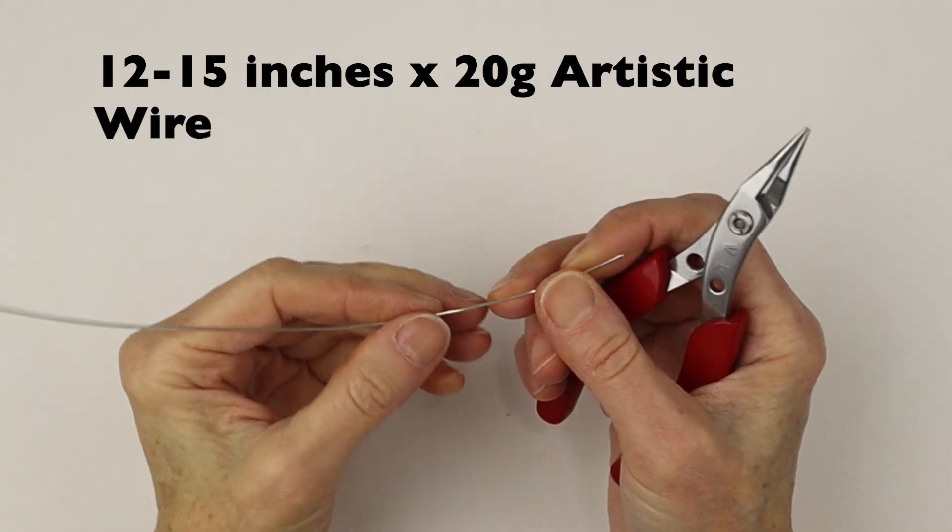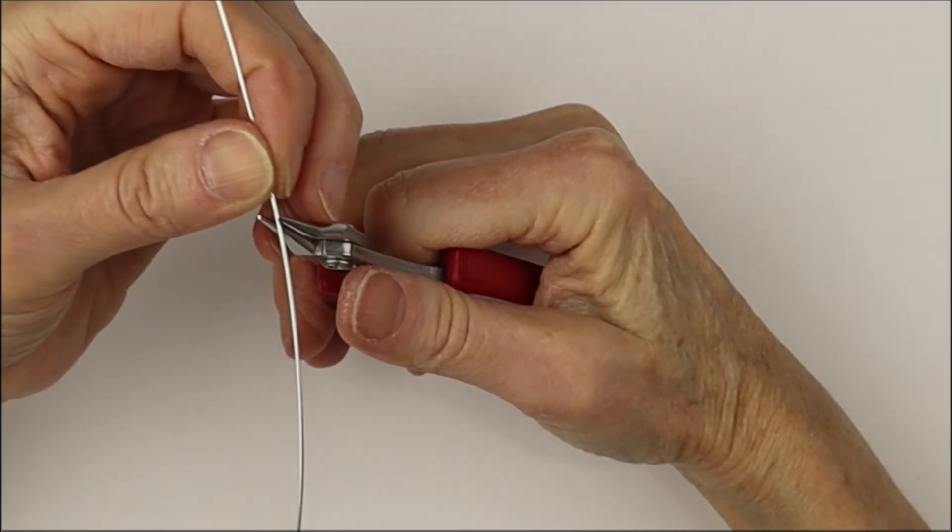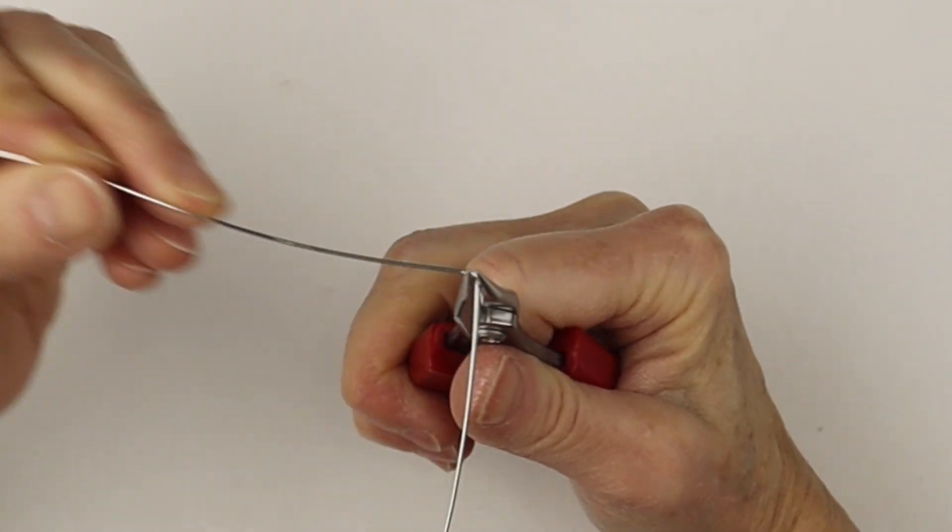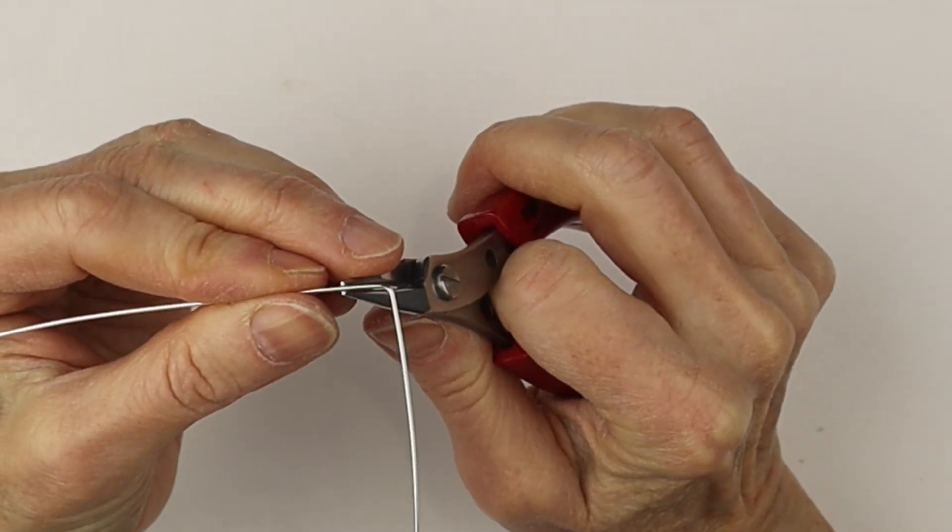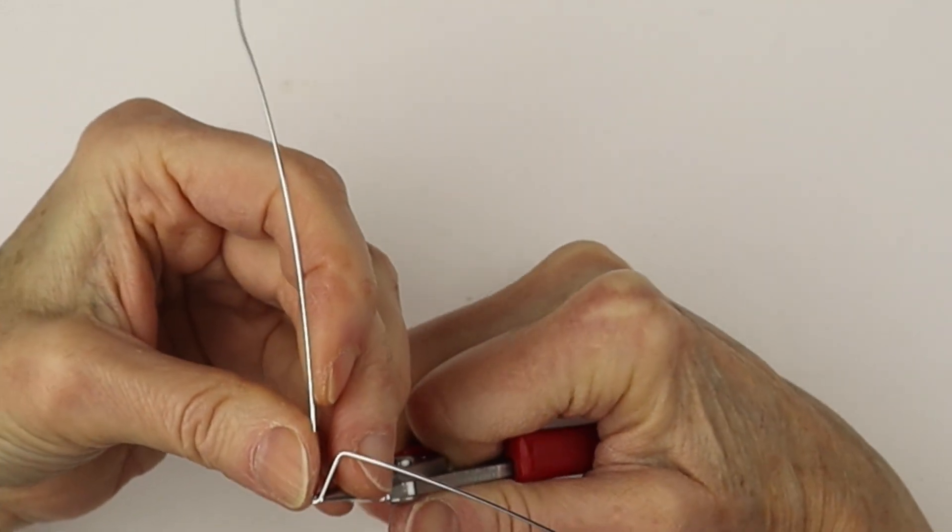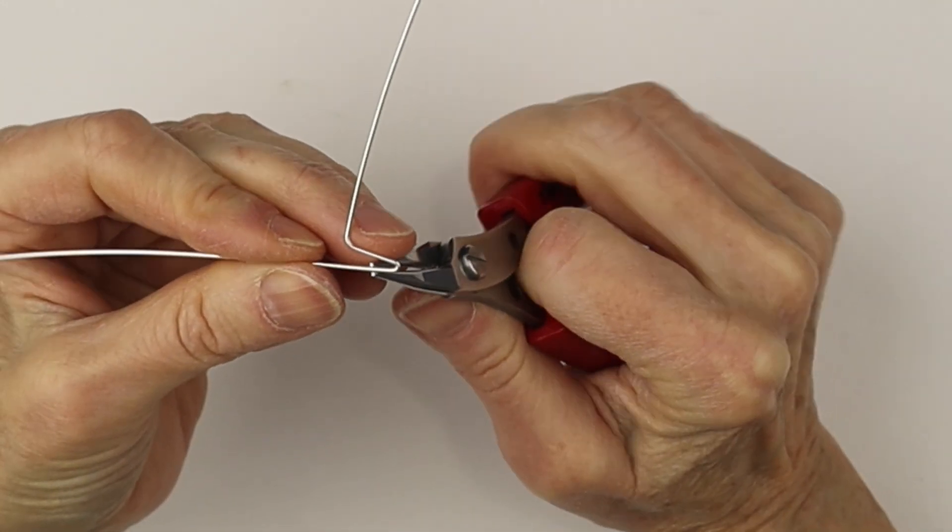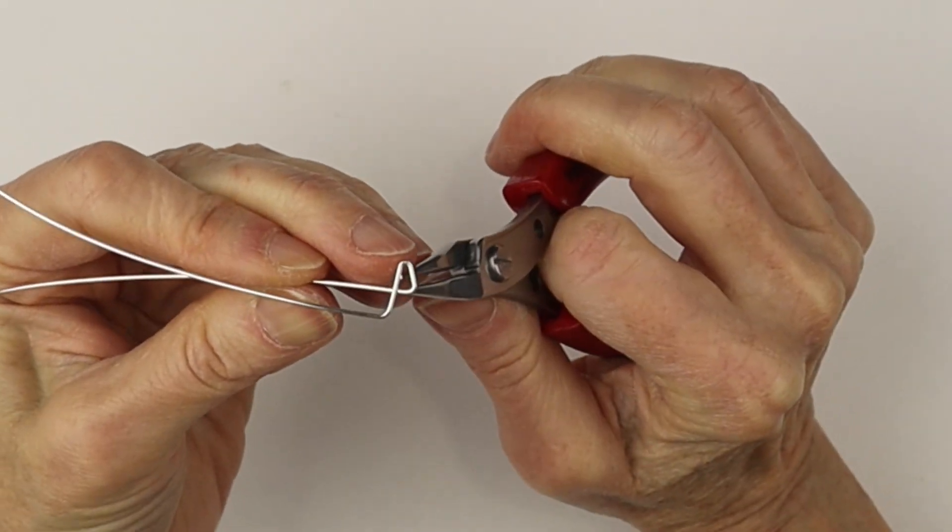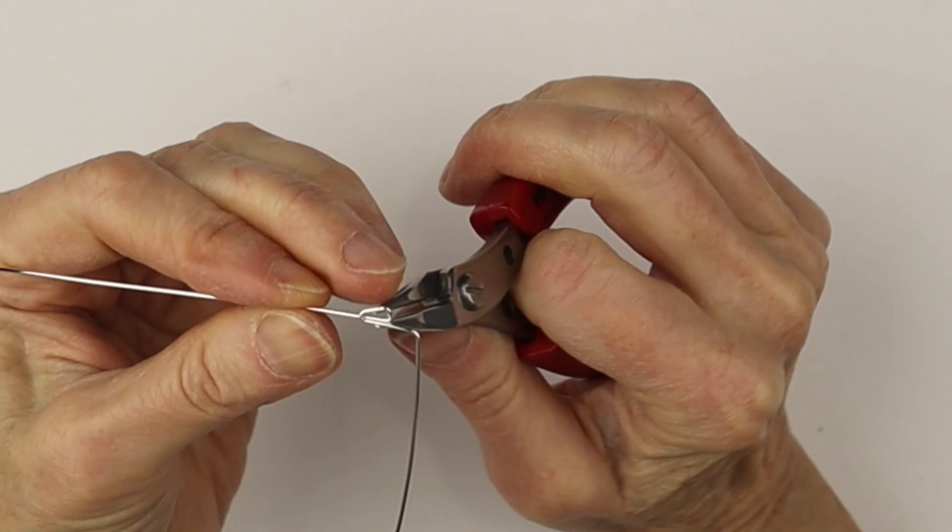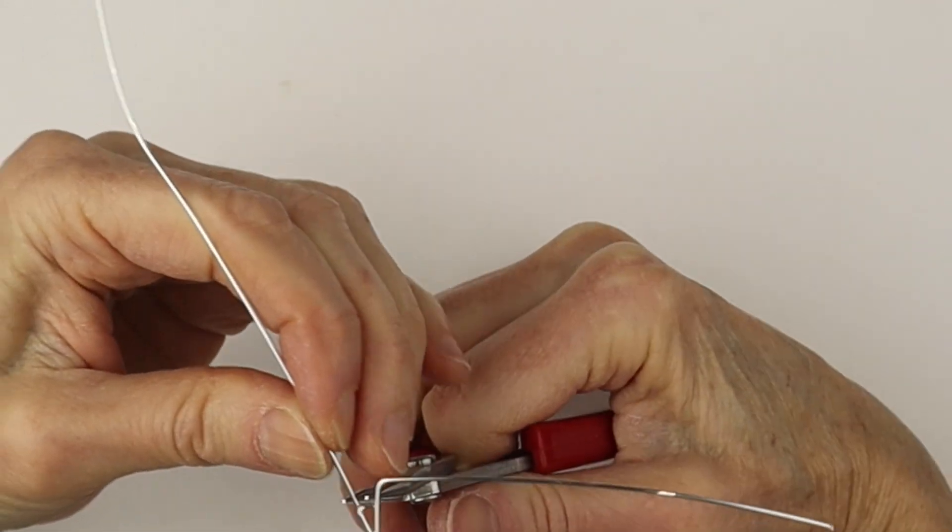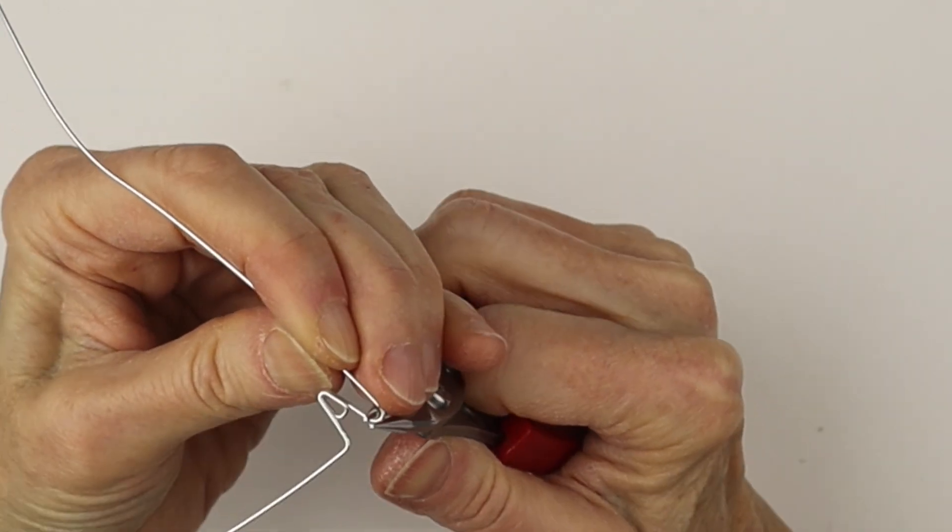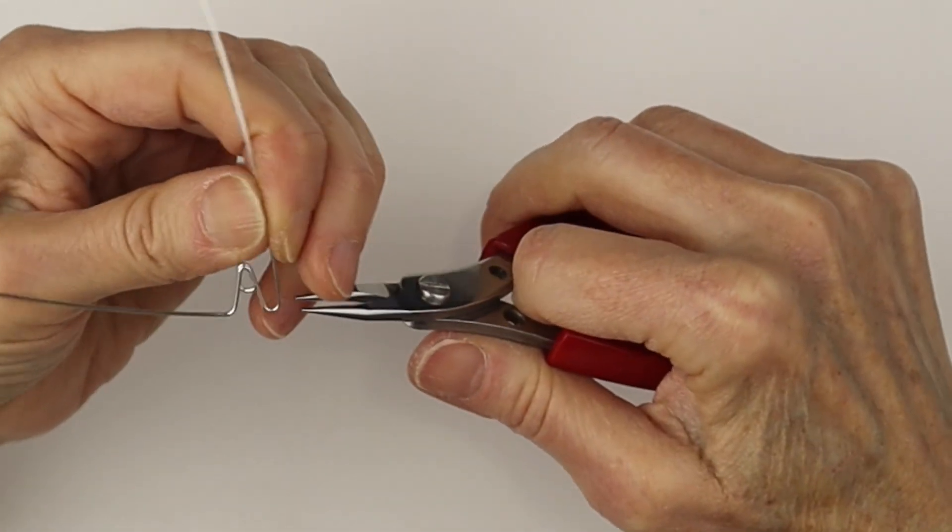Now you can do a name to dangle off the heart or you can dangle anything you like. We're going to do the name Amber. Amber is the moderator of my YouTube channel and a dear friend. So we are going to bring the wire around for the A. I will link up a playlist of tutorials for the letters and names to help you do your own name out of wire.